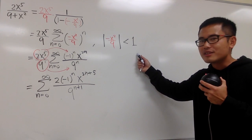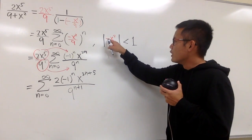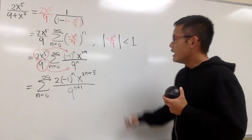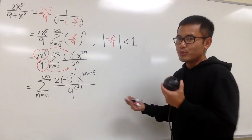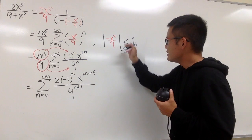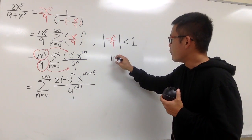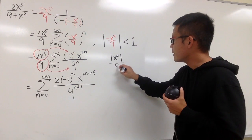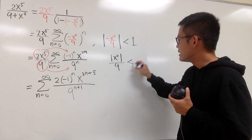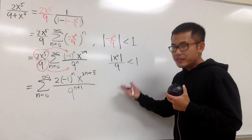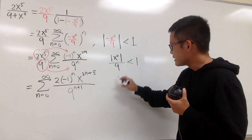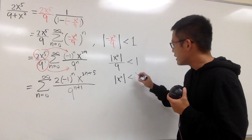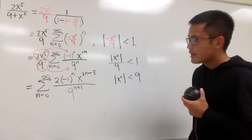Now let's figure out the radius of convergence. We have the negative inside the absolute value, so the negative doesn't matter. The over 9 is just a constant, so we can write this as the absolute value of x squared over 9, and this must be less than 1. We can multiply both sides by 9, giving absolute value of x squared less than 9.